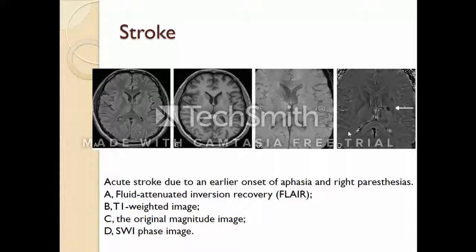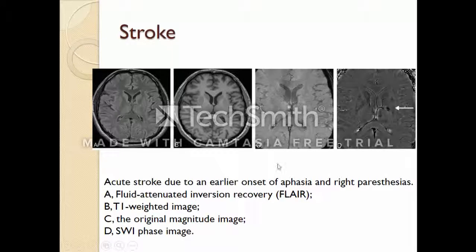Our next photograph series is about stroke. Here you can see an acute stroke case due to an early onset of aphasia and right paresthesias. As you can see, there is no abnormality in picture A or picture B. Picture C also seems quite normal, but when we look at the susceptibility weighted image we can see this little lesion indicated by the white arrow.